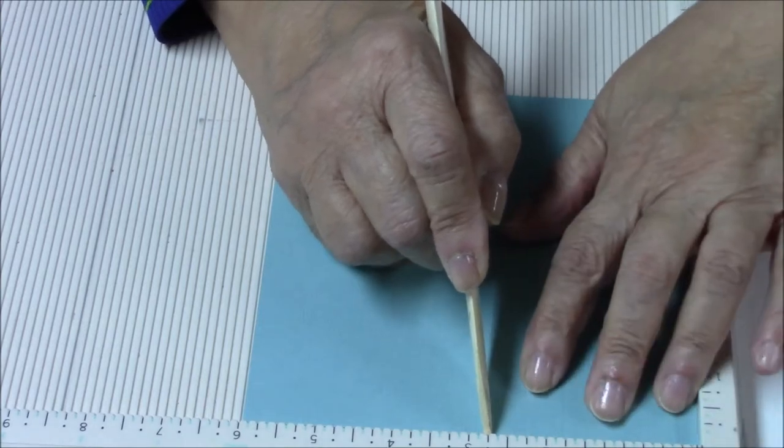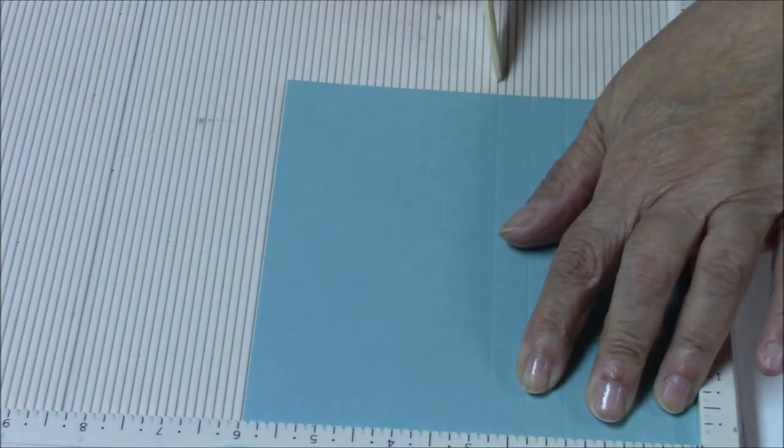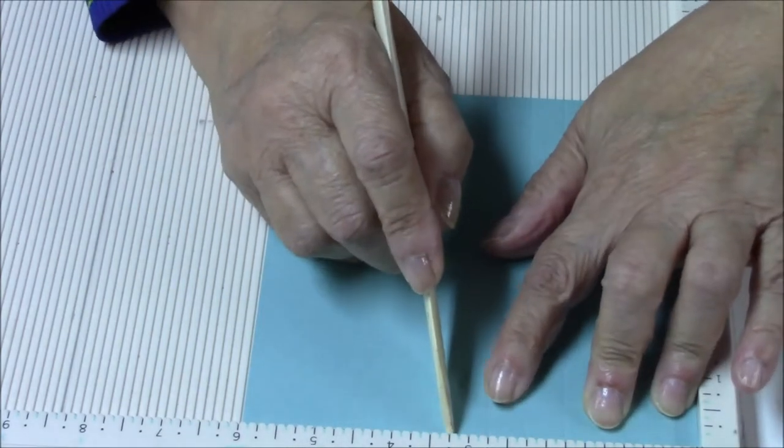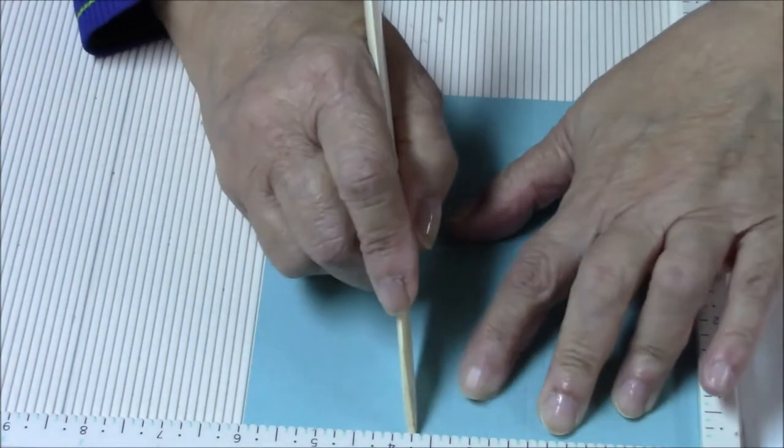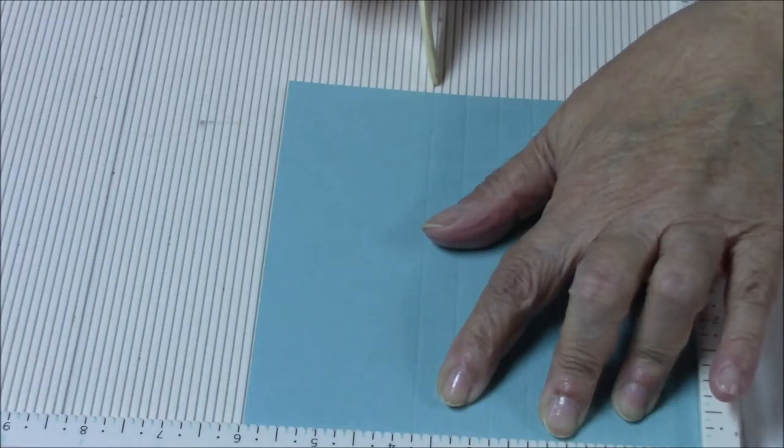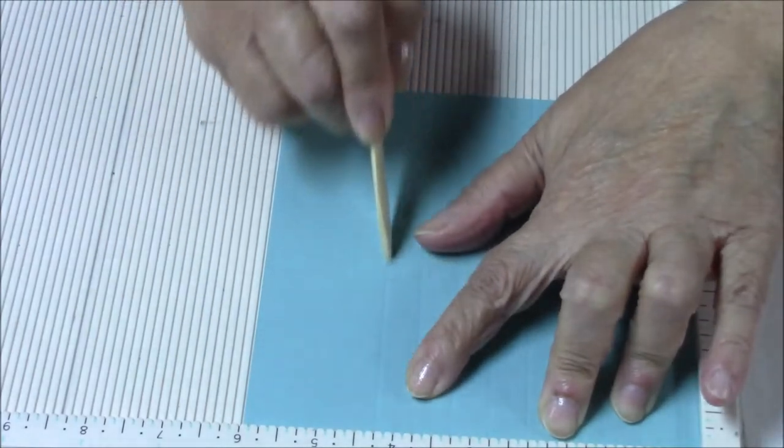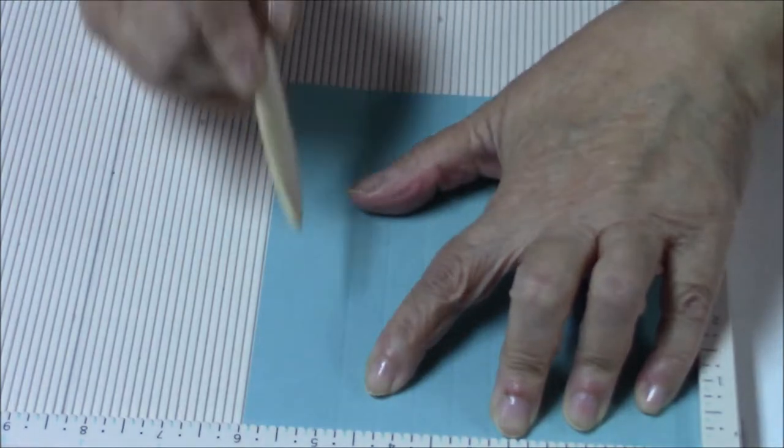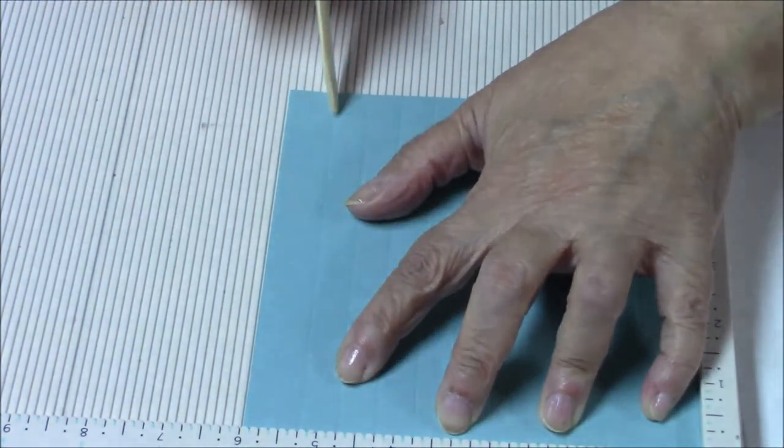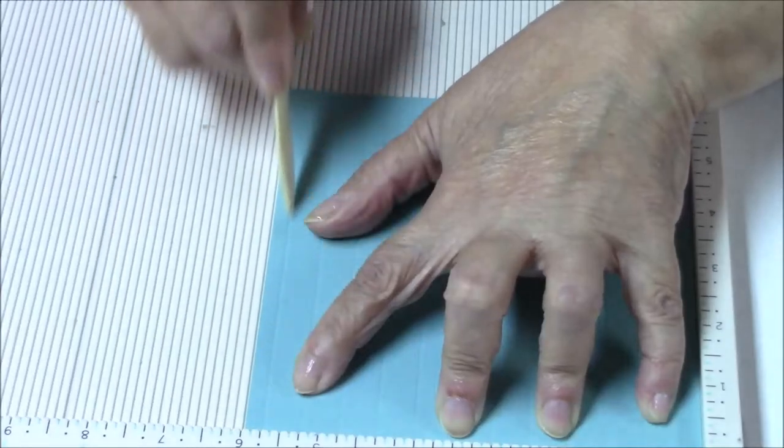Next score, adding 1/2 inch is at 2 3/4. Next score is at 3 1/4. Then 3 3/4. 4 1/4. 4 3/4, 5 1/4, and 5 3/4.